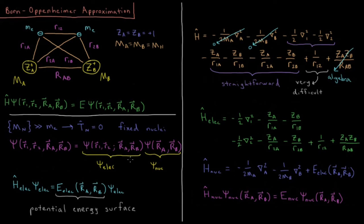That electronic wave function, multiplied by our nuclear wave function (a function of R_A and R_B), gives our total 12-dimensional wave function. What we're typically solving in molecular quantum mechanics is the electronic Schrödinger equation: H_elec psi_elec = E_elec psi_elec. The electronic energy is a function of the nuclear coordinates, giving us a potential energy surface. Any potential energy surface you've heard of for molecules comes from solving the electronic Schrödinger equation at a variety of different nuclear coordinates.